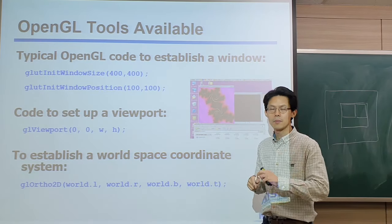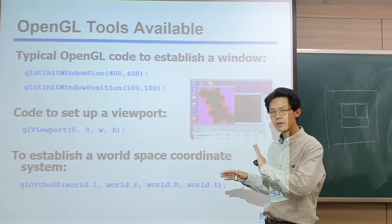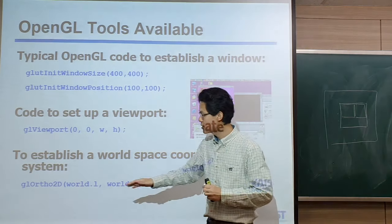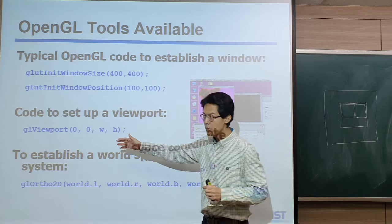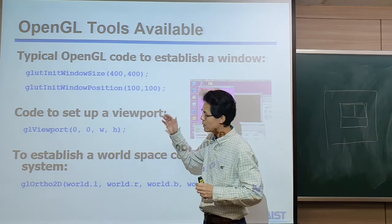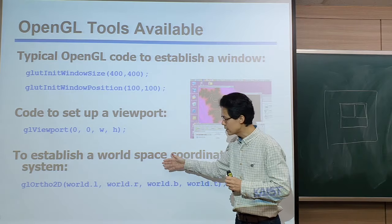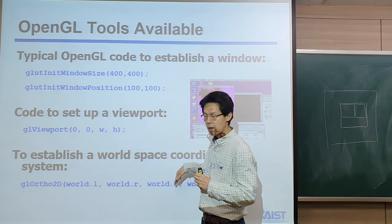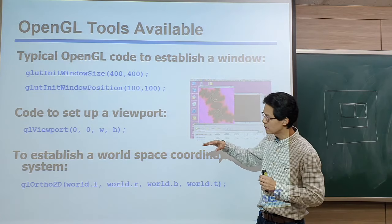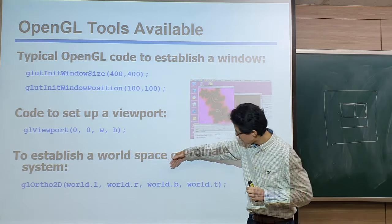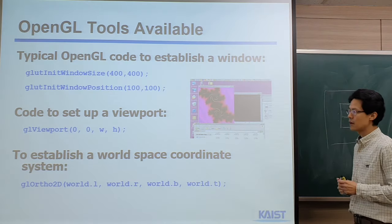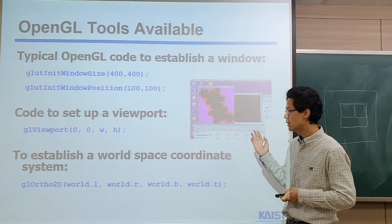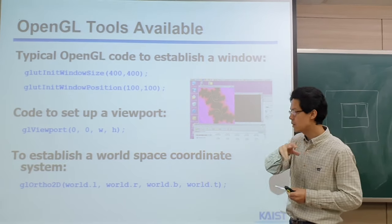Last time we talked about how we can map from world space to screen space. By calling OpenGL functions, that functionality is provided. Basically, with GLU ortho2D, we are setting up the camera. Under the world space, we are looking at the space from left to right, bottom to top. We are setting up the camera in the world space. You can connect what we talked about in the last lecture to this function.